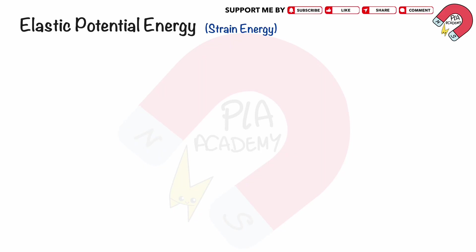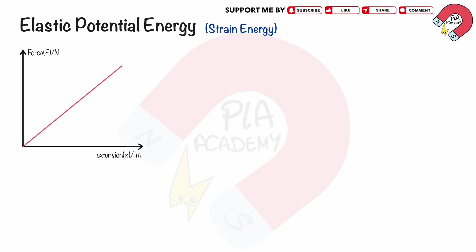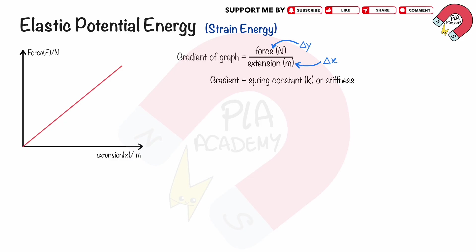Elastic potential energy or strain energy: the graph of the applied force against the extension is shown. The gradient of the graph is the force in newtons divided by the extension in meters, because the force is on the vertical axis (delta y) and the extension on the horizontal axis (delta x). So the gradient of the graph represents the spring constant, or stiffness k. The area under the graph forms a triangle shape. The base of this triangle represents the extension x, and the height represents the force f. The area of a triangle is given by half the base multiplied by the height.